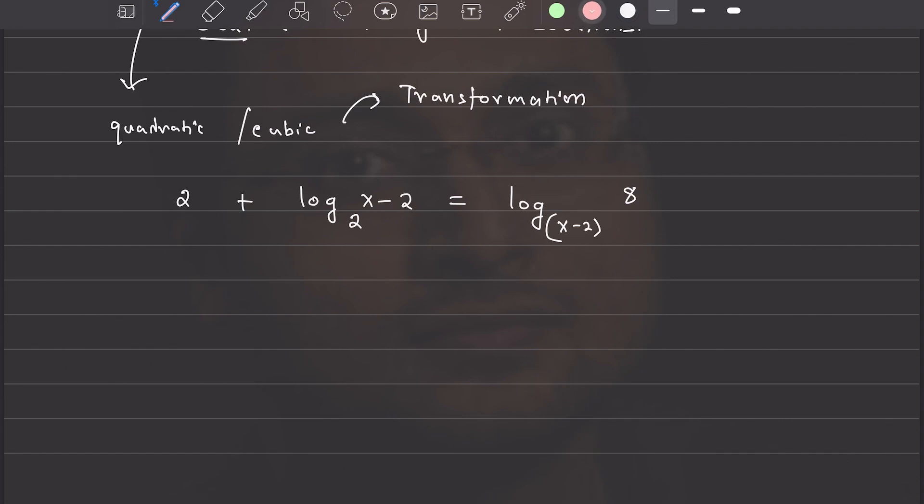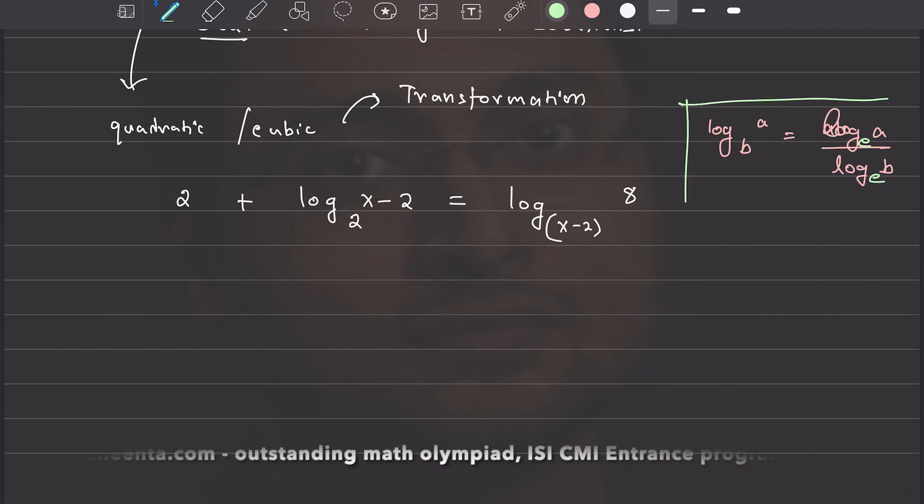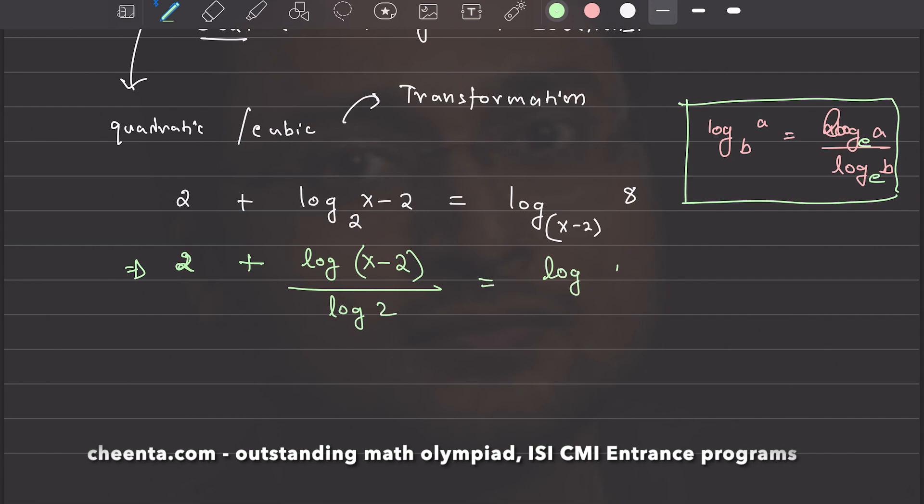We can actually simplify this. We know that log of a base b is log a over log b. And here, the base can be anything. You can make the base as e, for example, if you want, or any other base. This is a standard formula from logarithmic functions. We will be using that.